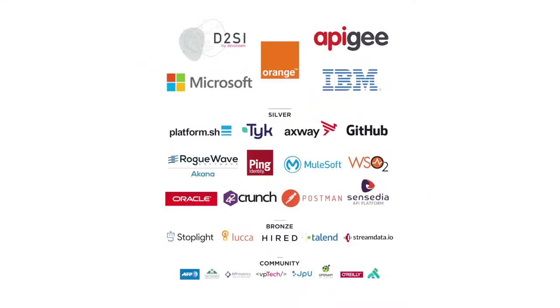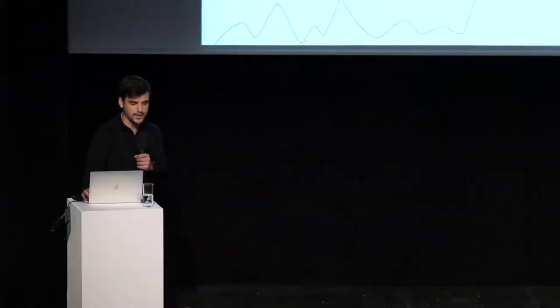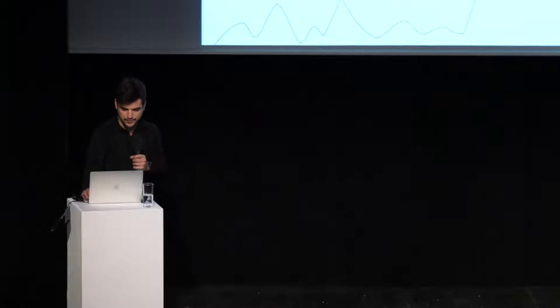My name is Phil Sturgeon. I'm a Brit living in New York, so my accent's probably getting a little bit funny. And I work for WeWork, a company that has more APIs than I could possibly count.